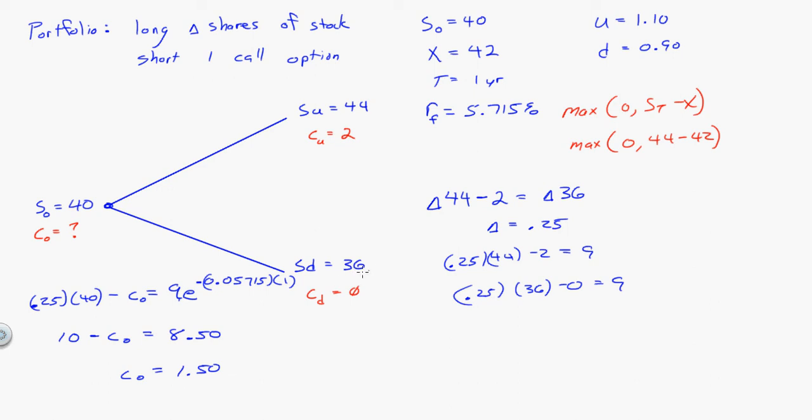So either way, this portfolio would be worth nine dollars in one year. So this is today, this is one year, so it's going to be worth nine bucks in a year. Well, nine dollars in a year is the same thing as 8.50 today. So this portfolio, I'm willing to pay eight dollars and fifty cents for today. The stock costs ten dollars, that means I must have sold the call for a dollar and fifty cents.